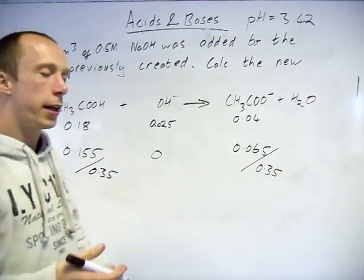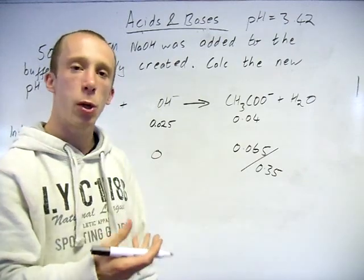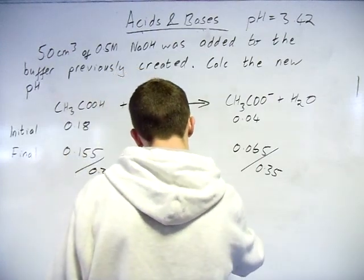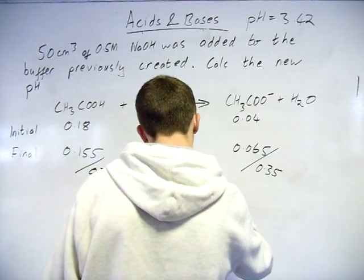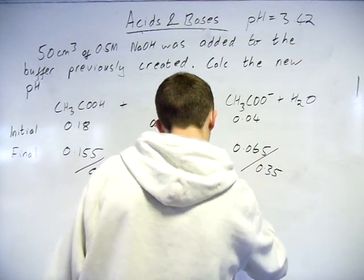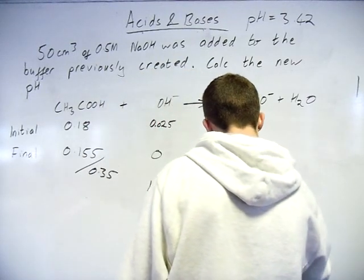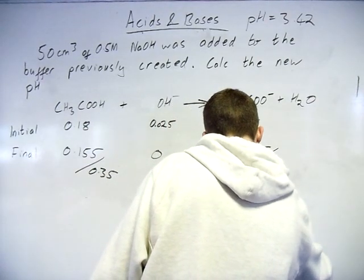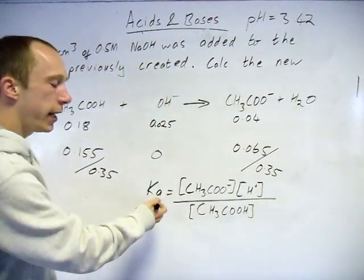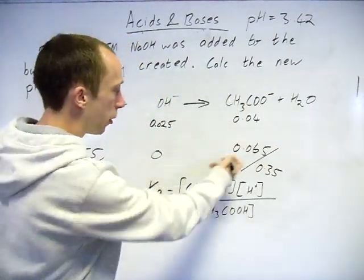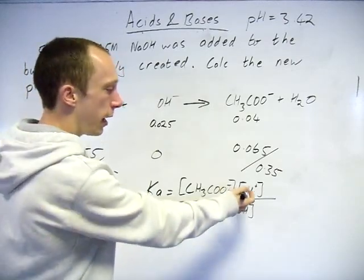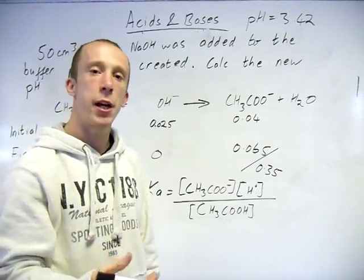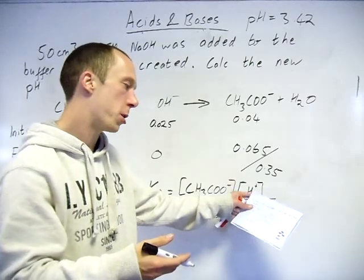So we know the moles, we now want to work out the concentrations. So I am going to divide by 0.35, because it's the 350 cubic centimeters, we were at 300 previously, we have added 50, and I am dividing by 1000 to convert to decimeter cubed. Likewise there, and now all I am going to do is plug them back into the same equations which you saw before. So plug your K in from the previous equation, plug your new concentrations into there, that will, with a bit of rearranging, give you a value for the hydrogen ion.